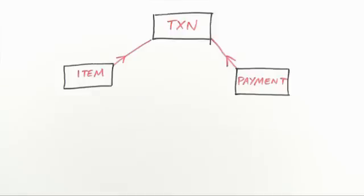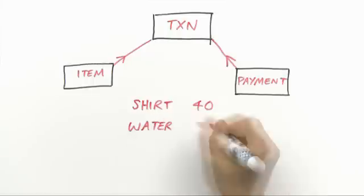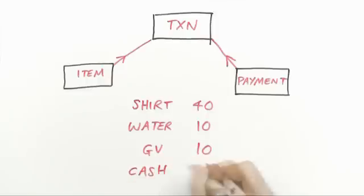Let's say we have a transaction where €40 is spent on the shirt and €10 is spent on the water. Payments are made by €10 of gift voucher and €40 of cash.